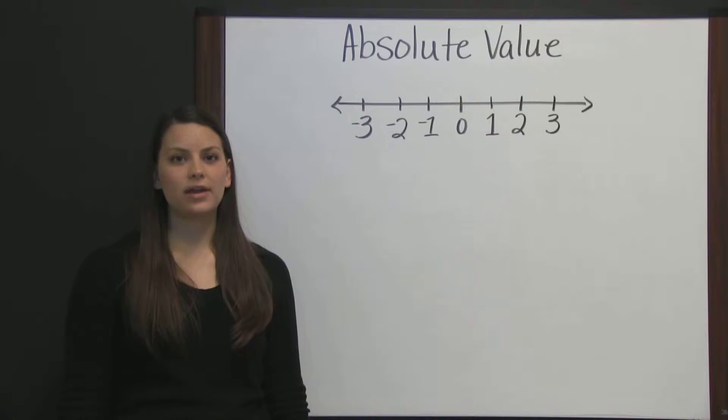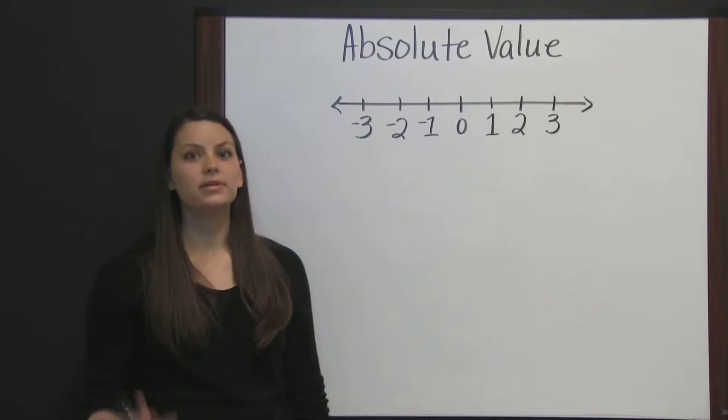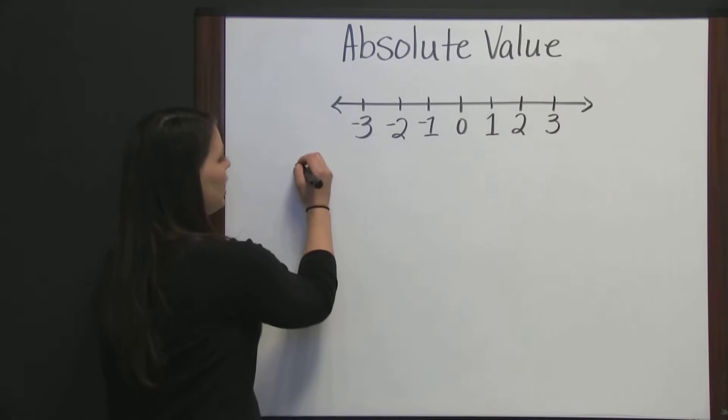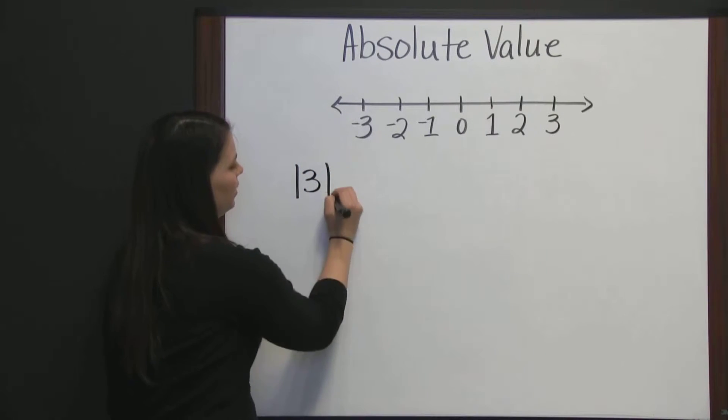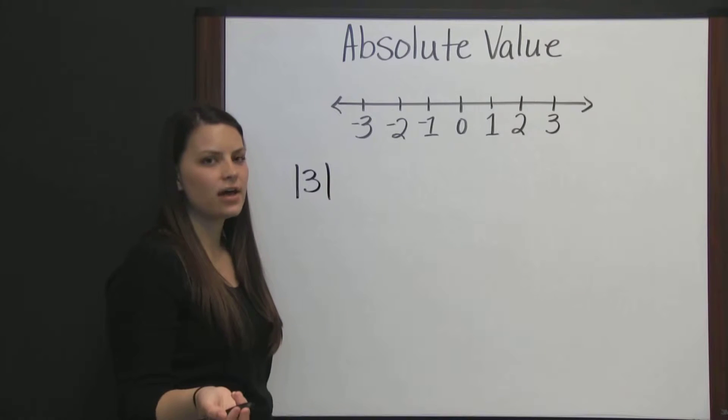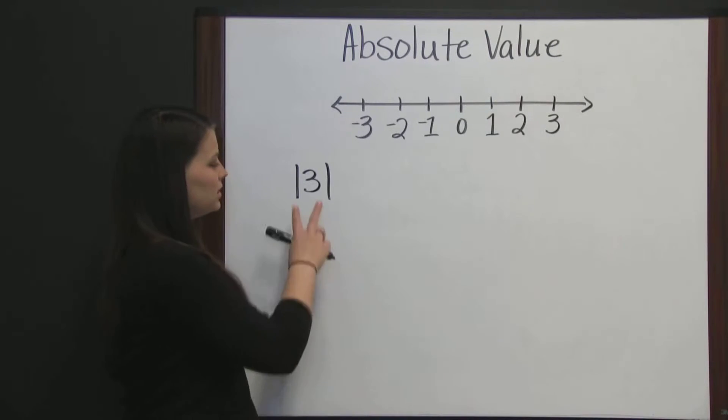It's denoted by a pair of vertical lines surrounding the value, such as the absolute value of three. You can think of absolute value like you're being asked a question, and the question is,